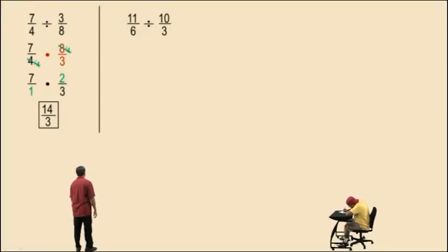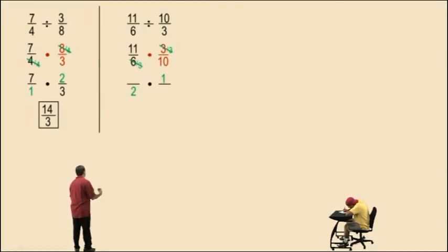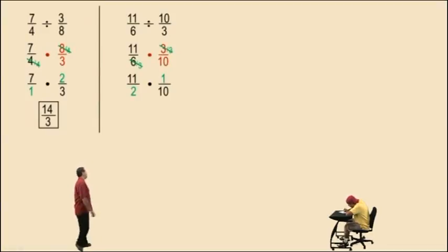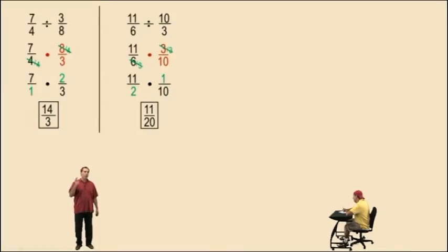Eleven-sixths divided by ten-thirds. We change it to eleven-sixths times three-tenths. Three and six have a common factor of three, so we'll divide that out. That gives us one over two, and bring down our eleven over ten, and multiply straight across the top and straight across the bottom, and we get eleven-twentieths. Remember, when you multiply fractions, the denominators do not have to be the same — you just go straight across the top and straight across the bottom. Only when you're adding and subtracting fractions do the denominators have to be the same, so remember that.